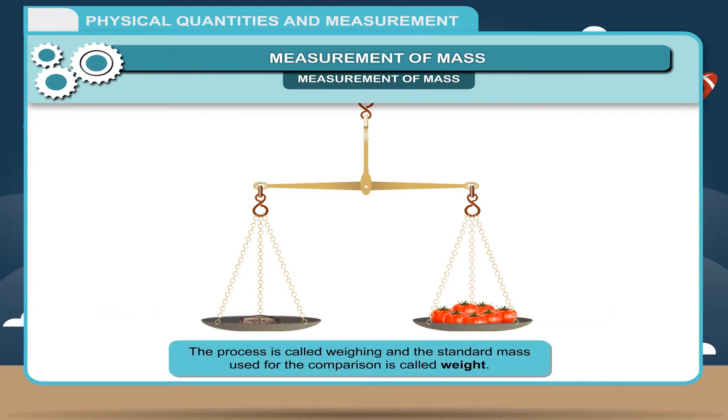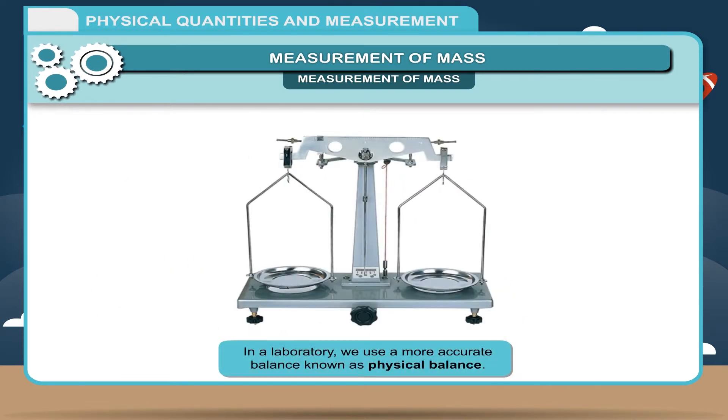The process is called weighing and the standard mass used for the comparison is called weight. In a laboratory, we use a more accurate balance known as physical balance.